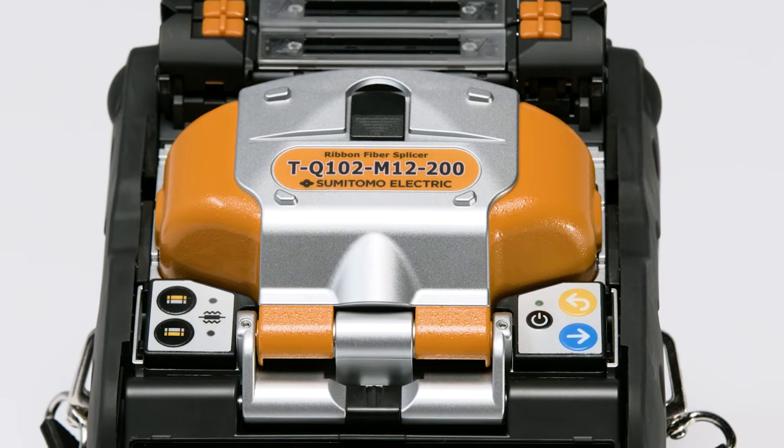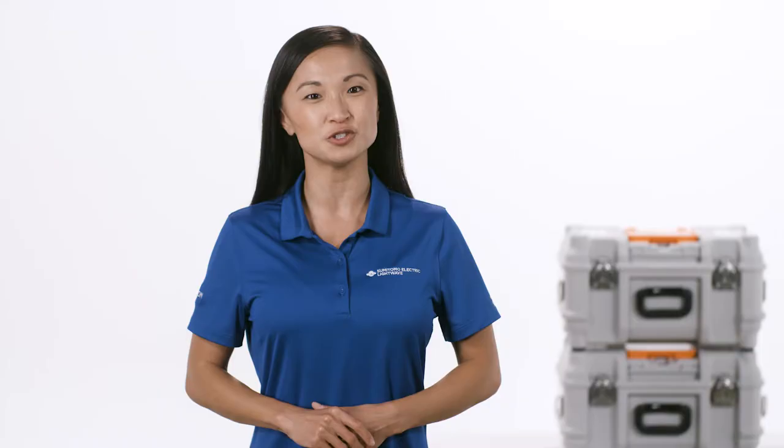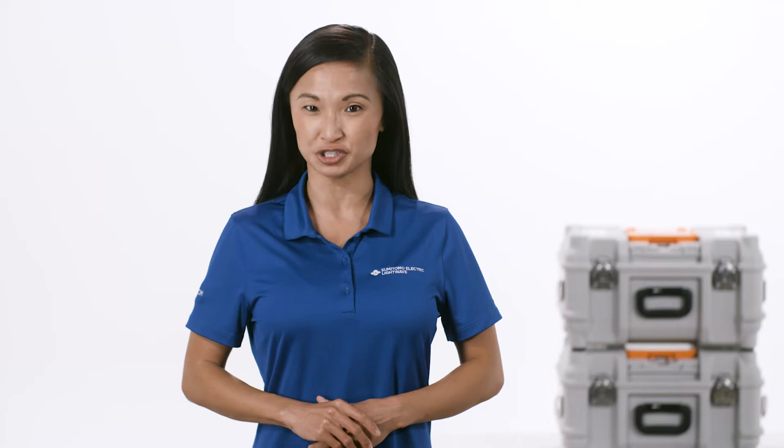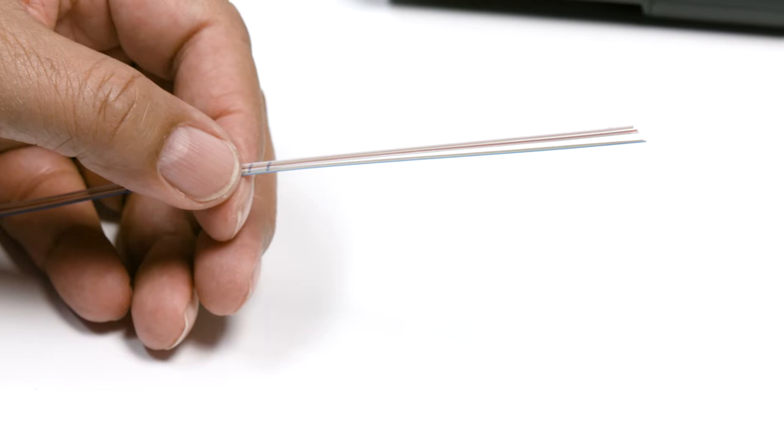For this demonstration, we'll be using the Q102 M12-200, Sumitomo Electric's latest ribbon fiber fusion splicer, which is made specifically for 200 micron splicing. Let's get started.